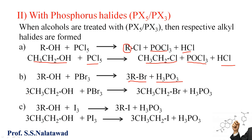For example, three molecules of ethanol react with phosphorus tribromide to give three molecules of ethyl bromide and phosphorous acid. Similarly, three molecules of alcohol react with phosphorus triiodide to form three molecules of alkyl iodide and phosphorous acid. For example, three molecules of ethanol react with phosphorus triiodide to give three molecules of ethyl iodide.